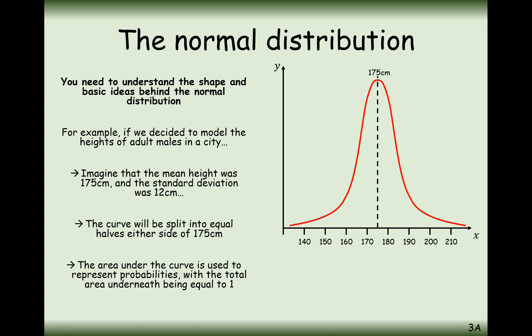The key fact of the normal distribution is that it's the area under the curve that represents probabilities, with the total area underneath the graph equal to 1. Because the graph is perfectly symmetric, the probability that someone is under 175 centimetres tall is 0.5, and the probability that someone is over 175 centimetres tall is also 0.5 — the area splits perfectly in half.